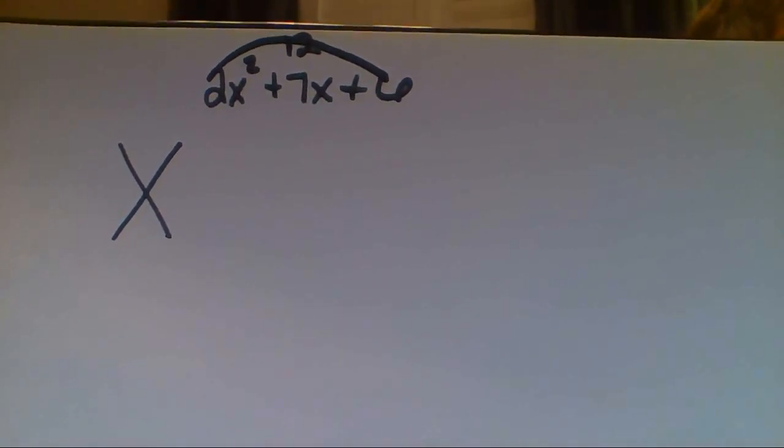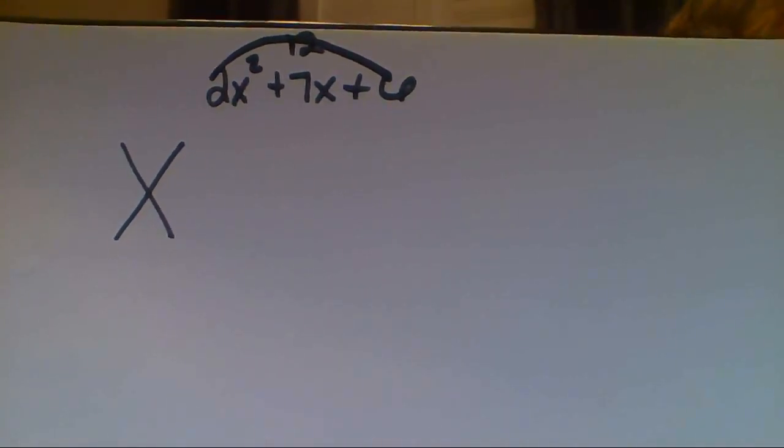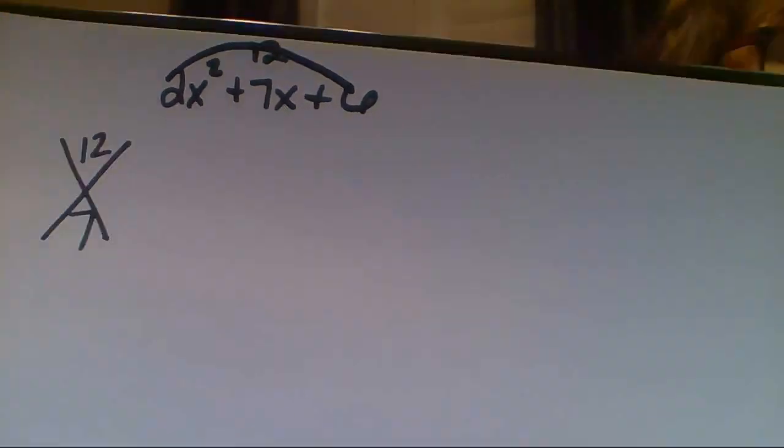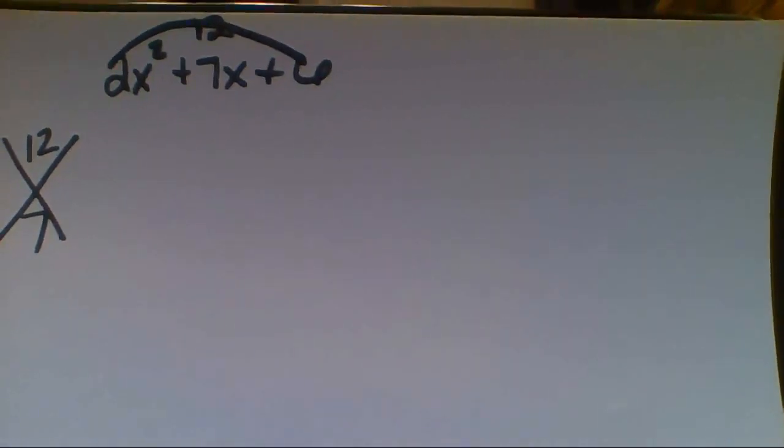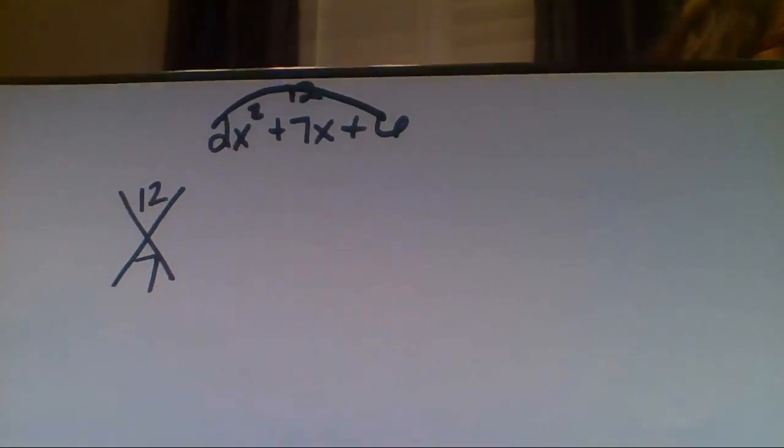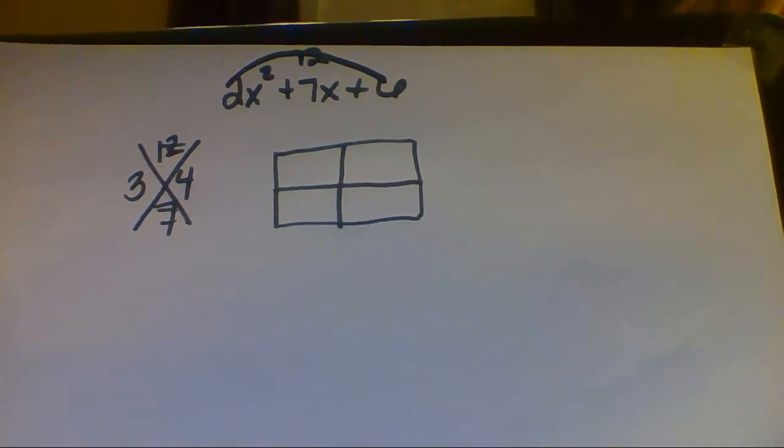2 times 6 is 12, so the 12 is going to go in the top of our diamond, and the 7 is going to go in the bottom. So what two numbers multiply to get 12 and add to get 7? That gives us 3 and 4.